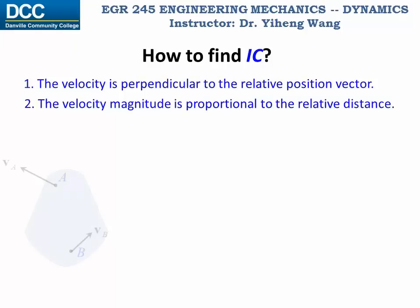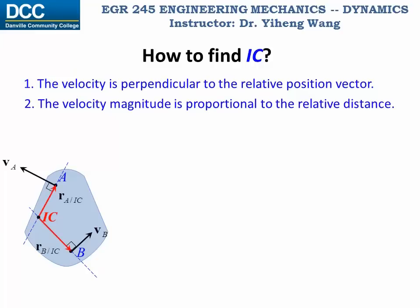In general there are three cases. In the first case, if you know the direction of the linear velocities of any two points in this rigid body and they are not parallel to each other, then if you draw the two lines that are perpendicular to these two velocity vectors respectively, the point of interception must be the instantaneous center of zero velocity, because this is the only way that the first condition can be satisfied.